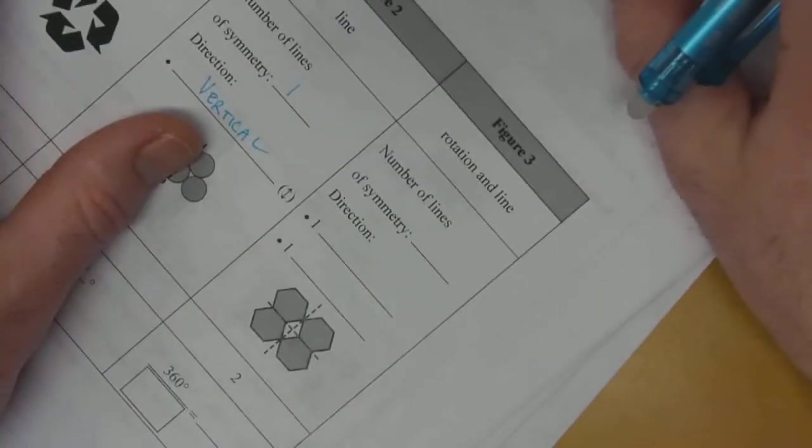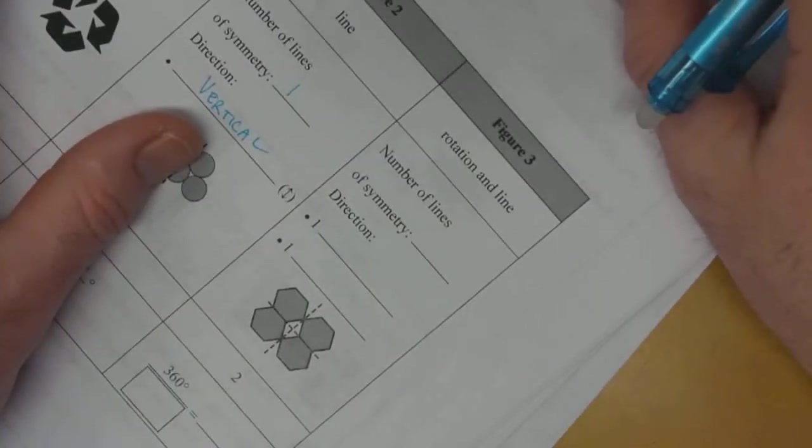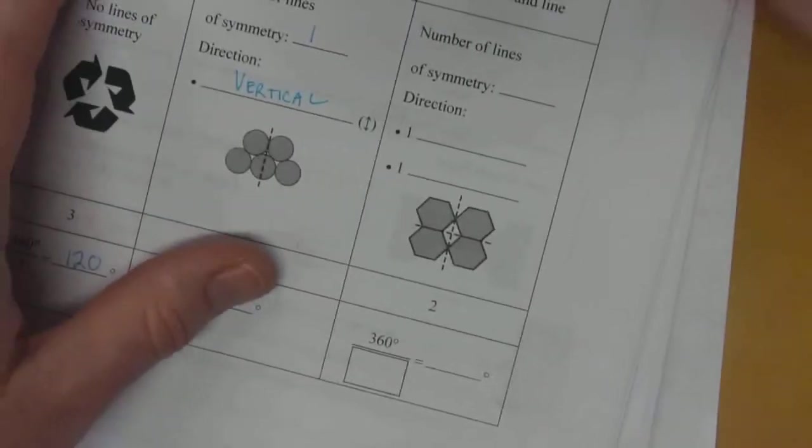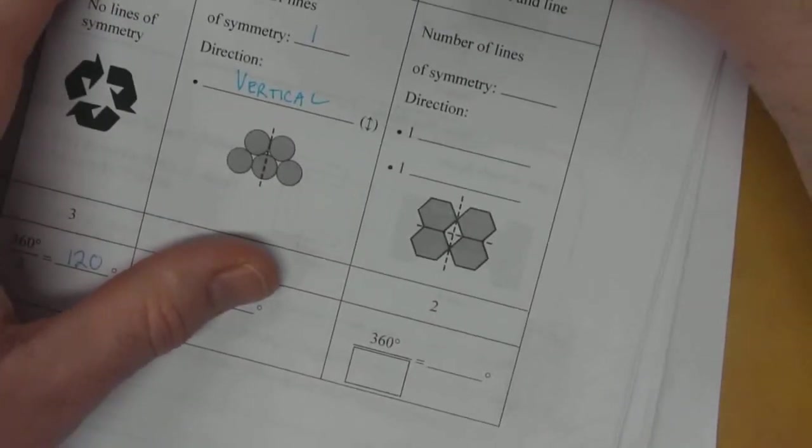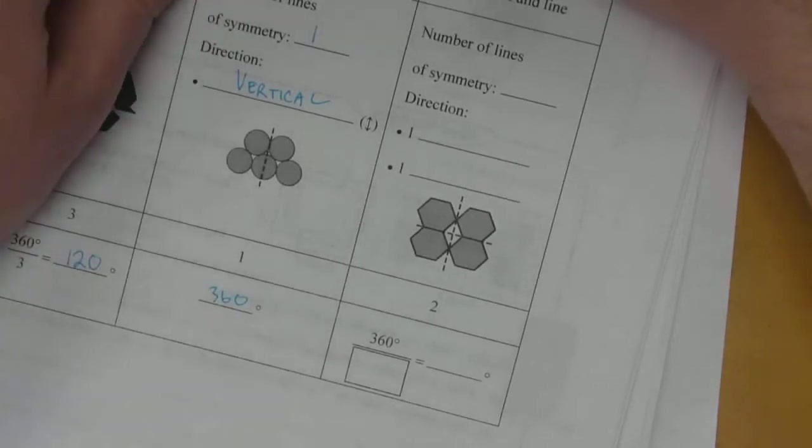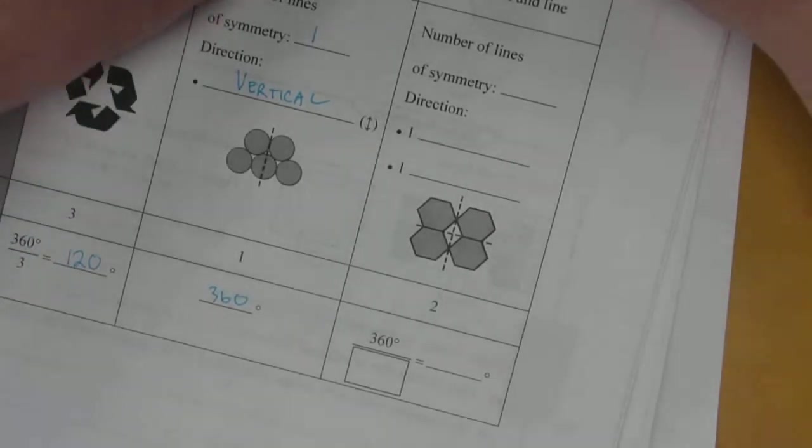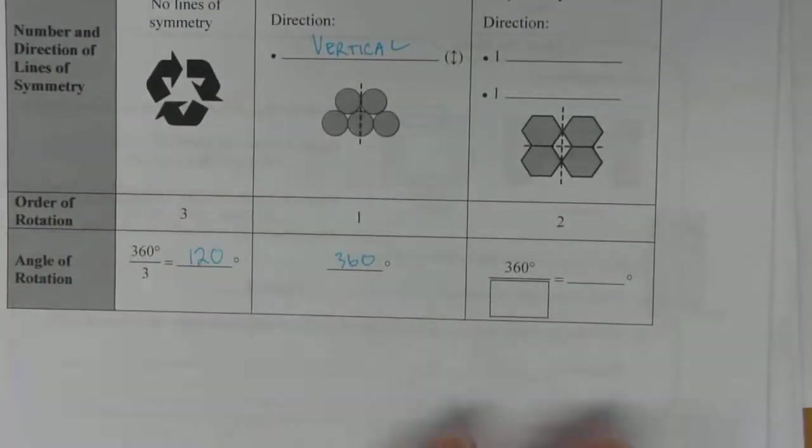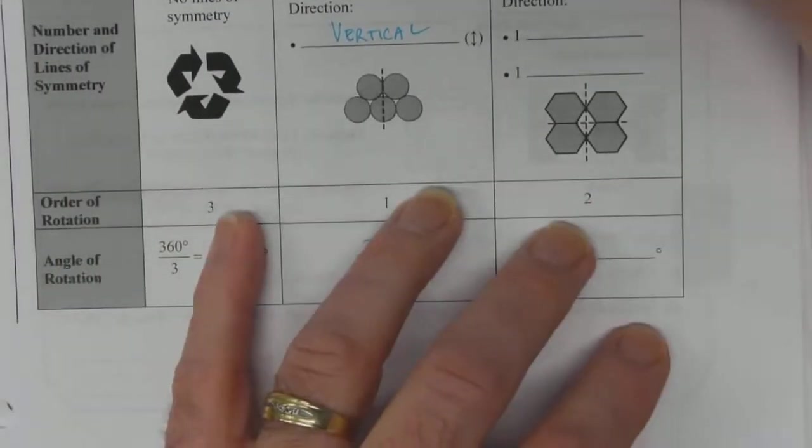Oh no, it wouldn't, because if you cut this in half, you've got a little bit more than half of this shape showing, so that means it's not symmetrical.